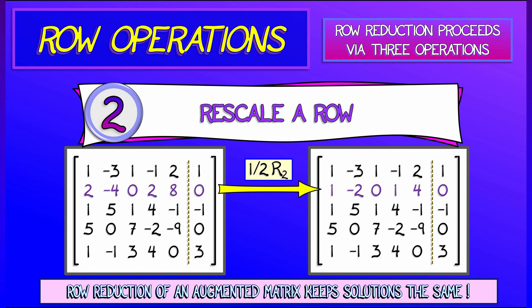The second operation we've also seen: you can rescale a row. So I can take the second row and multiply by one half. You can do that multiplication by any nonzero number you want, and you're going to keep the solution set to that system the same.